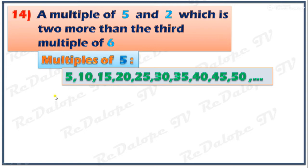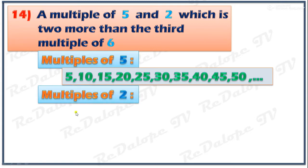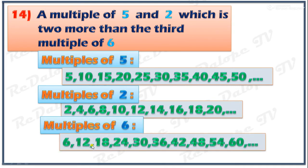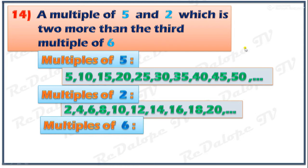For the multiples of 2: 2, 4, 6, 8, 10, 12, 14, 16, 18, 20. For the multiples of 6: 6, 12, 18, 24, 30, 36, 42, 48, 60, and so on. The first common multiples of 5 and 2 are 10 and 20.